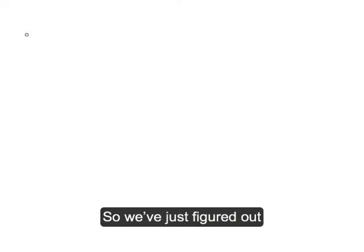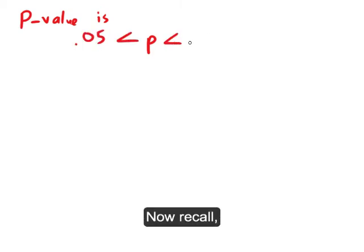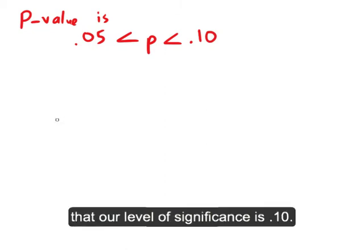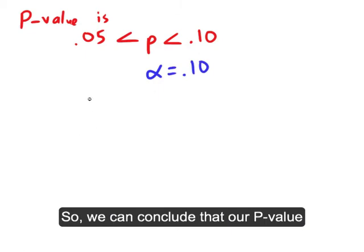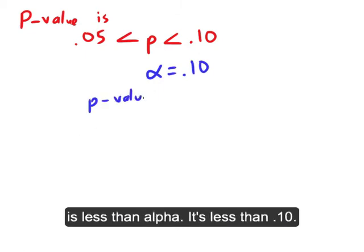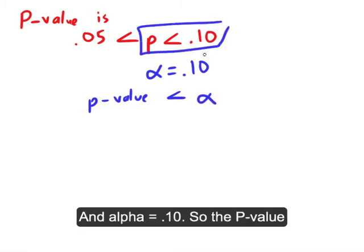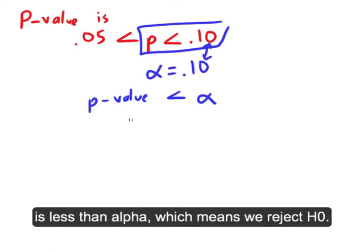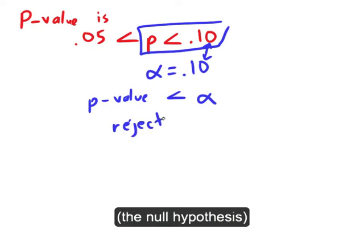So we've just figured out that the p-value is, well, we could say it this way. If you call it p, it's between 0.05 and 0.10. Now recall that our level of significance is 0.10. So we can conclude that our p-value is less than alpha because right here it's less than 0.10 and alpha is equal to 0.10. Right? So the p-value is less than alpha, which means we reject the null hypothesis H0.